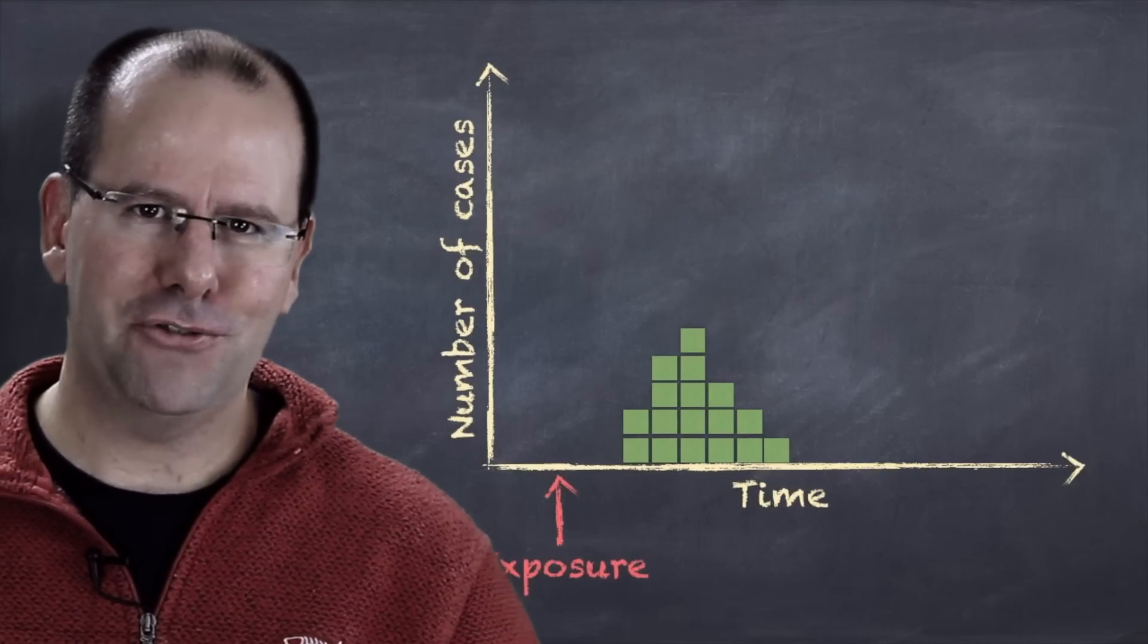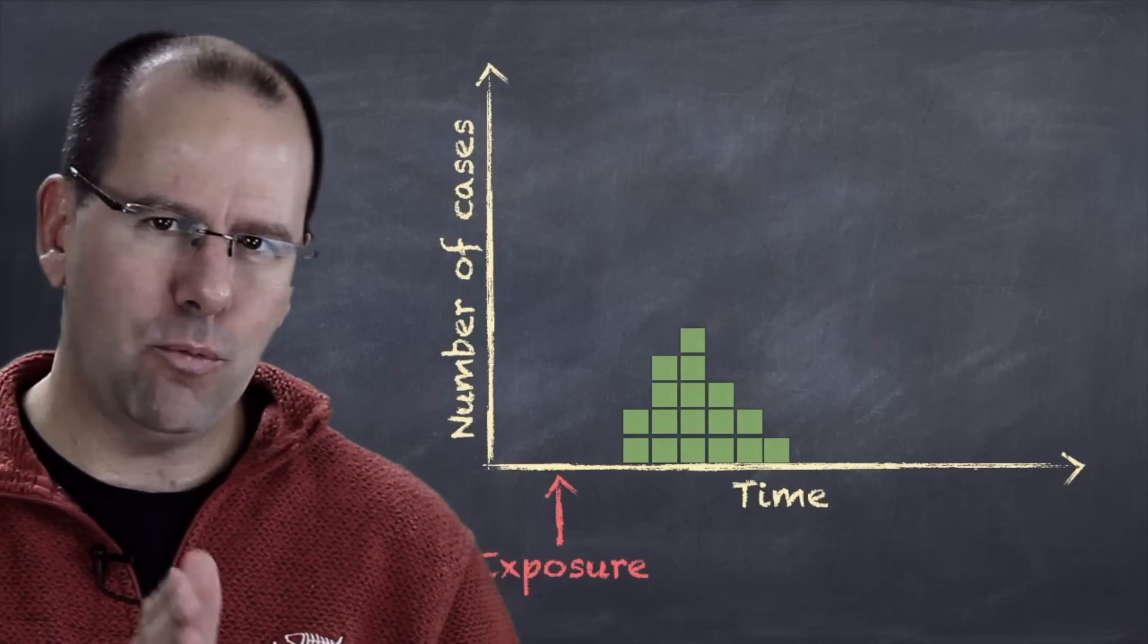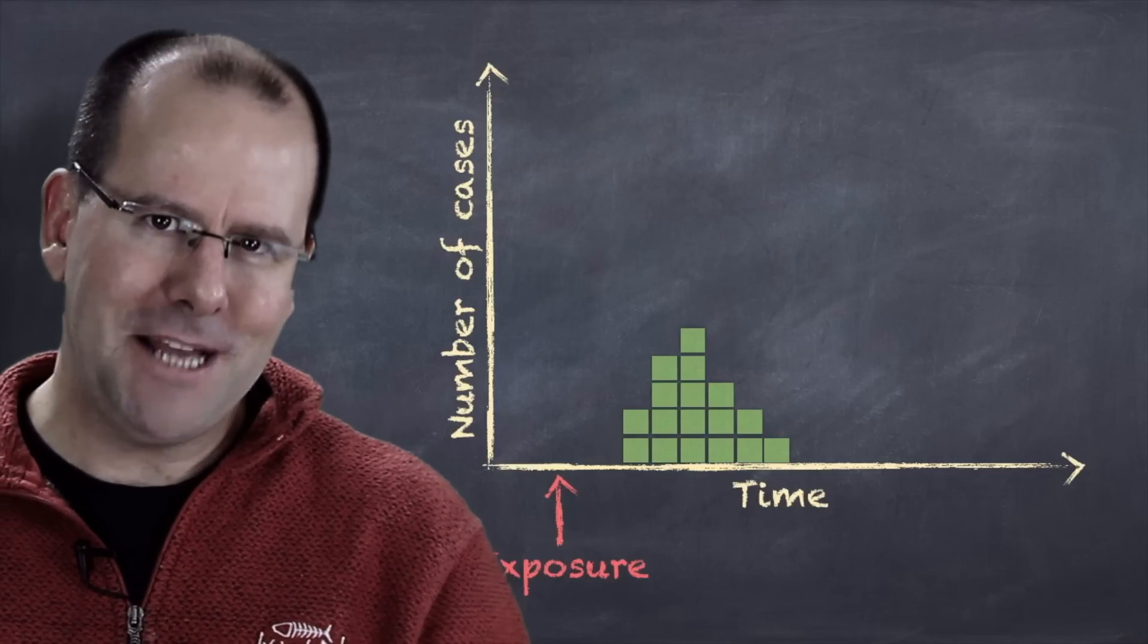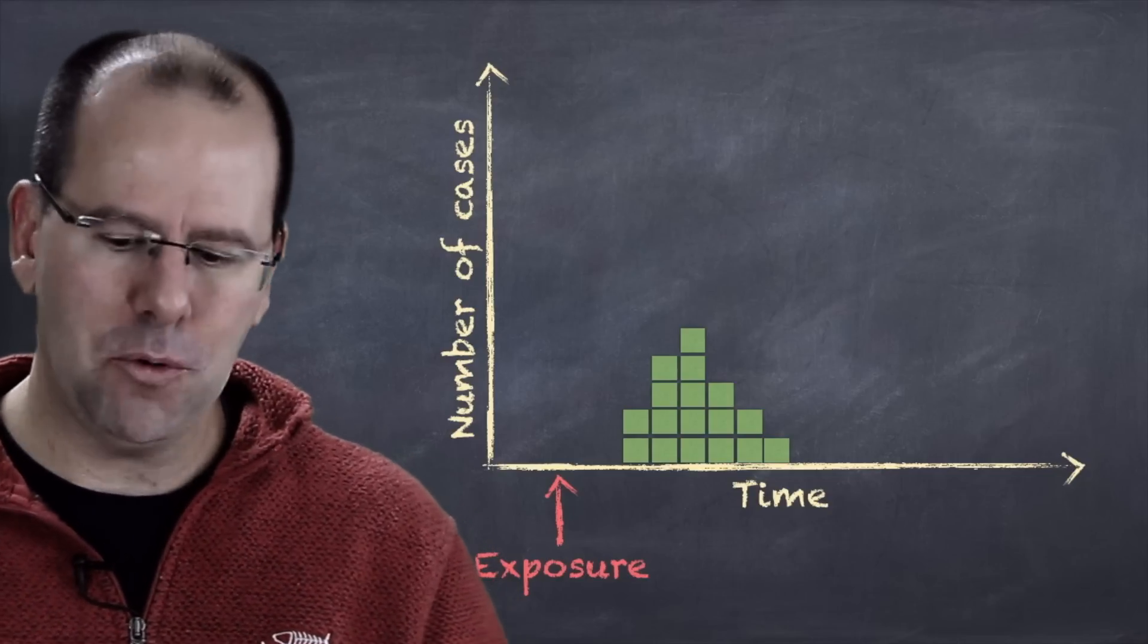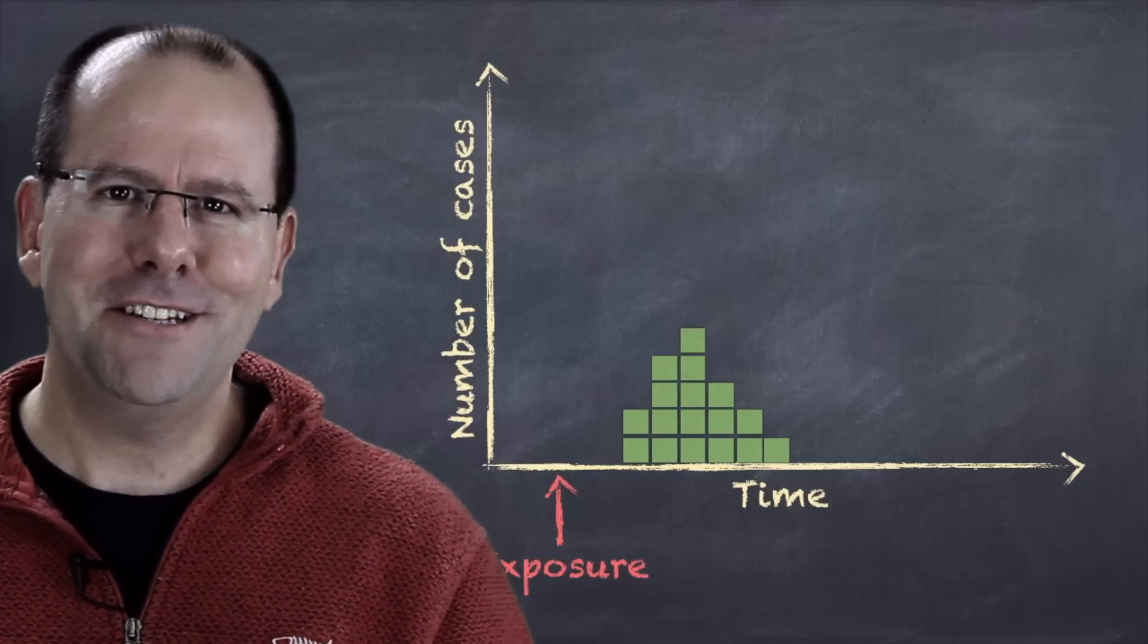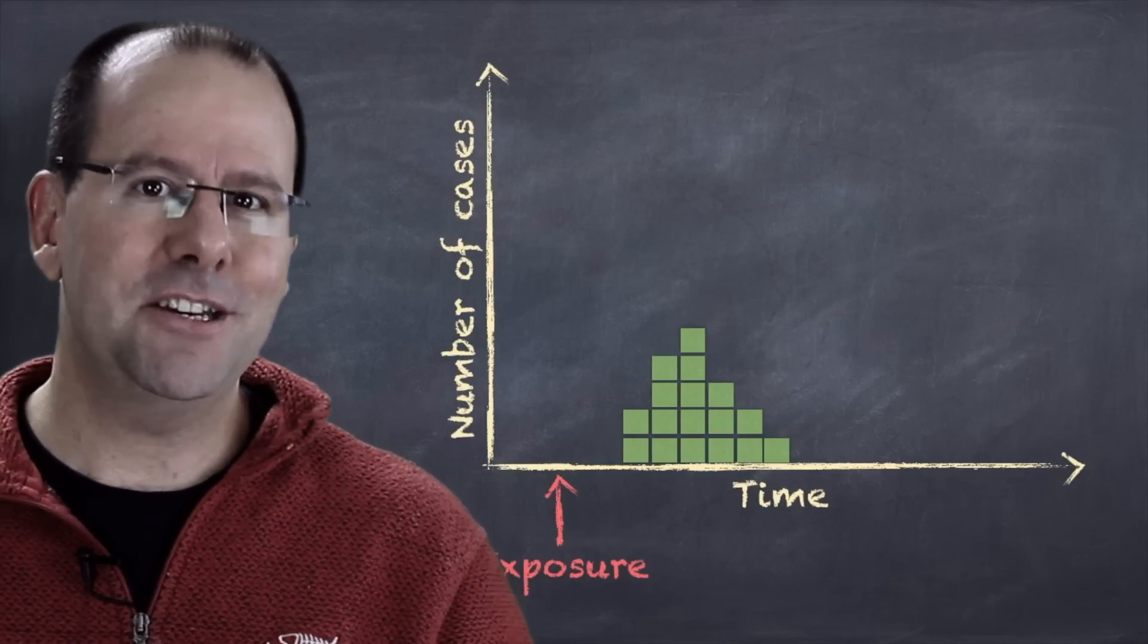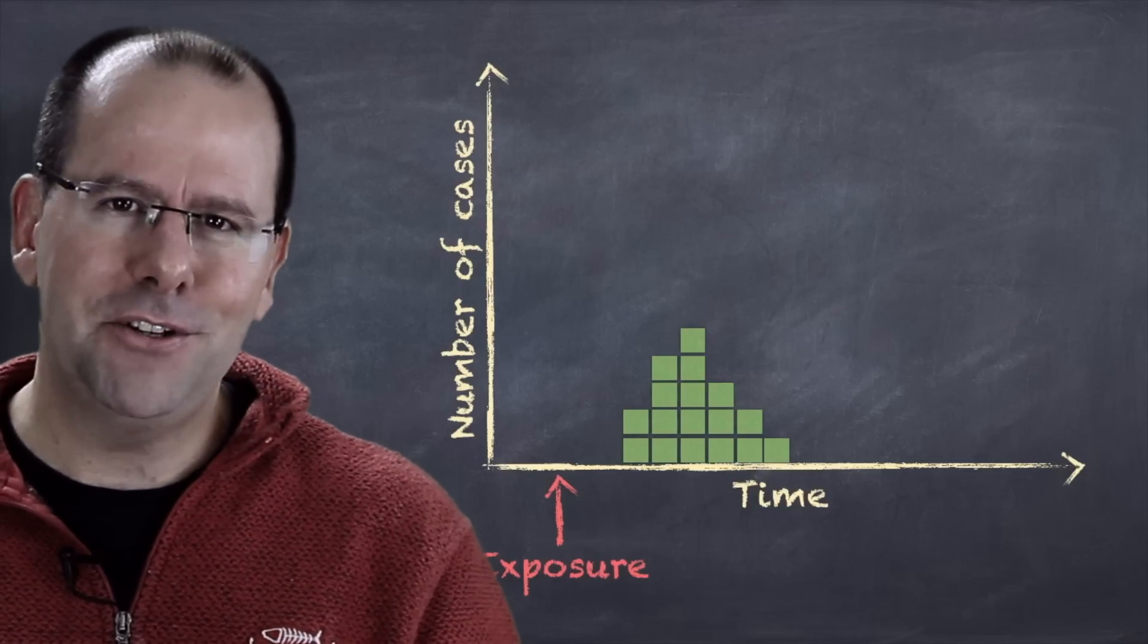So if you look at the example that's on the screen right now, that's a point source outbreak. Everybody was exposed at one point in time. Now you'll notice in this example that despite the fact that everybody got exposed at the same point in time, they all attended the same wedding, they all ate the same food, not everybody got sick at the same time. The reason for this is that there's a lot of variation between people in terms of firstly the extent of their exposure, so some people might have had more of the cake than others, and their individual susceptibility.